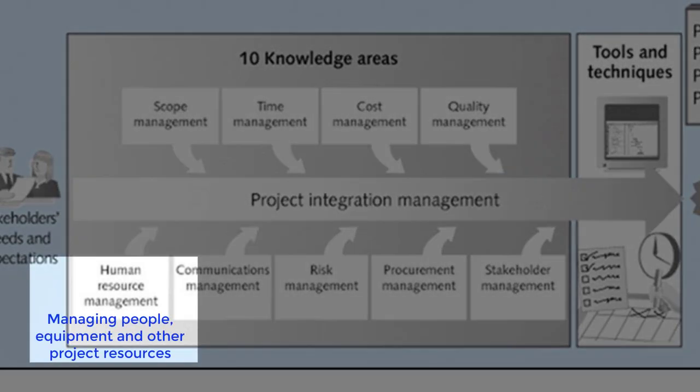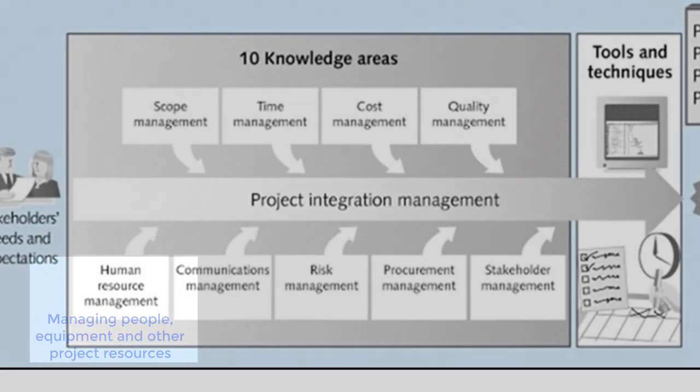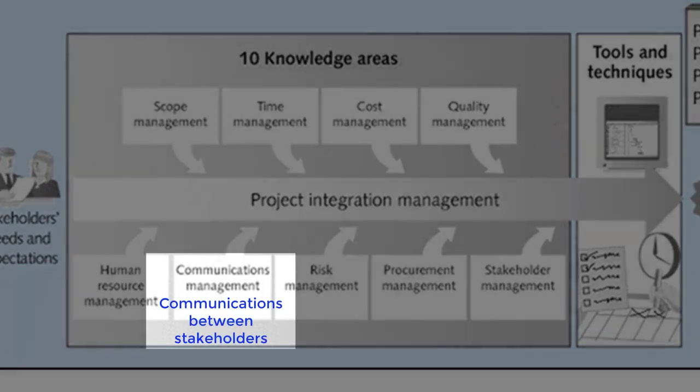Resource management is determining and managing the resources you need to complete the project. This is mainly human resources — allocating people to tasks and managing performance — though sometimes there may be equipment or other resources too. All projects get done through people working together, so communications management is needed to ensure everyone is communicating effectively throughout the project.